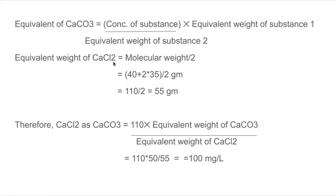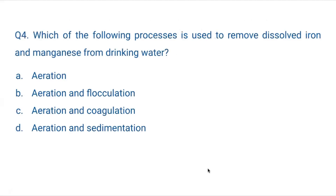Equivalent weight of calcium chloride = molecular weight ÷ valency (2). Molecular weight of CaCl₂ = 40 + (2 × 35) = 110, so equivalent weight = 110 ÷ 2 = 55 g. Therefore, equivalent as CaCO₃ = 110 × 50 ÷ 55 = 100 mg per liter. The answer is 100 mg per liter.